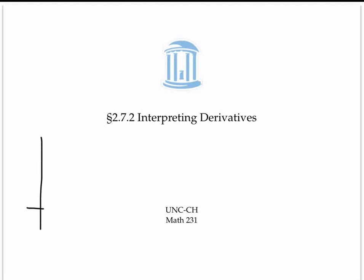We've seen that the derivative of a function y equals f of x at a point x equals a represents the slope of a tangent line through the point a, f of a.